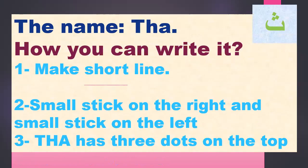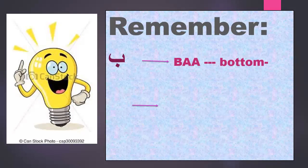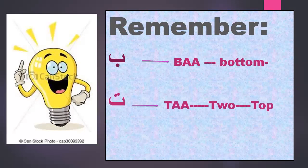Did you finish? Very good. Remember: Ba has one dot on the bottom. Ta has two dots on the top. Sa has three dots on the top. Ba — bottom. Don't forget.